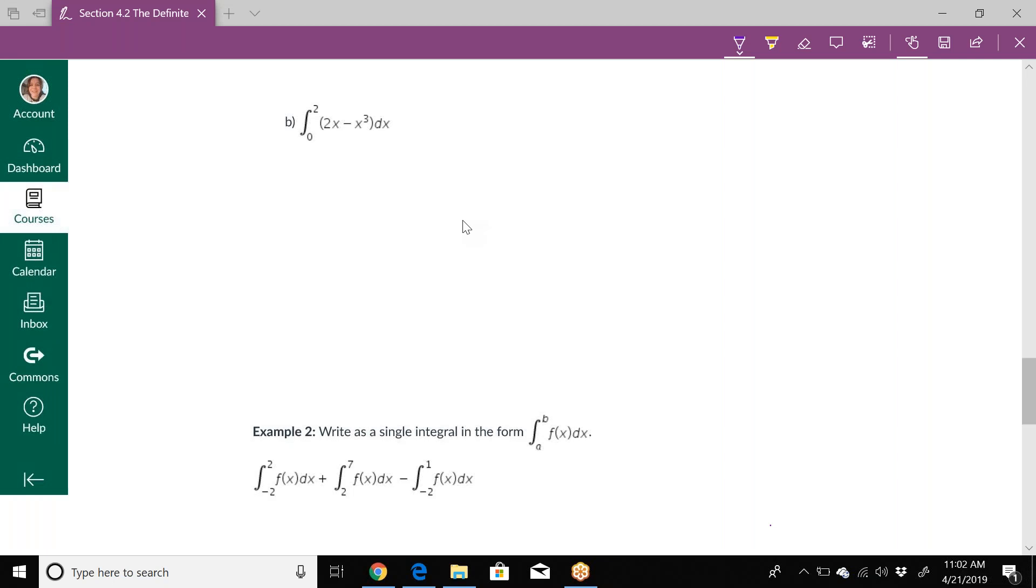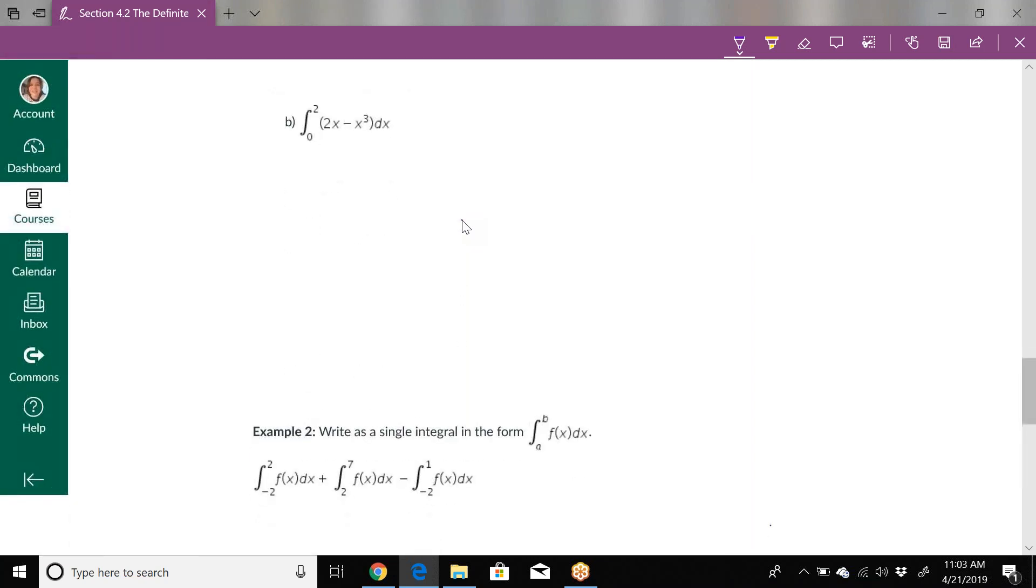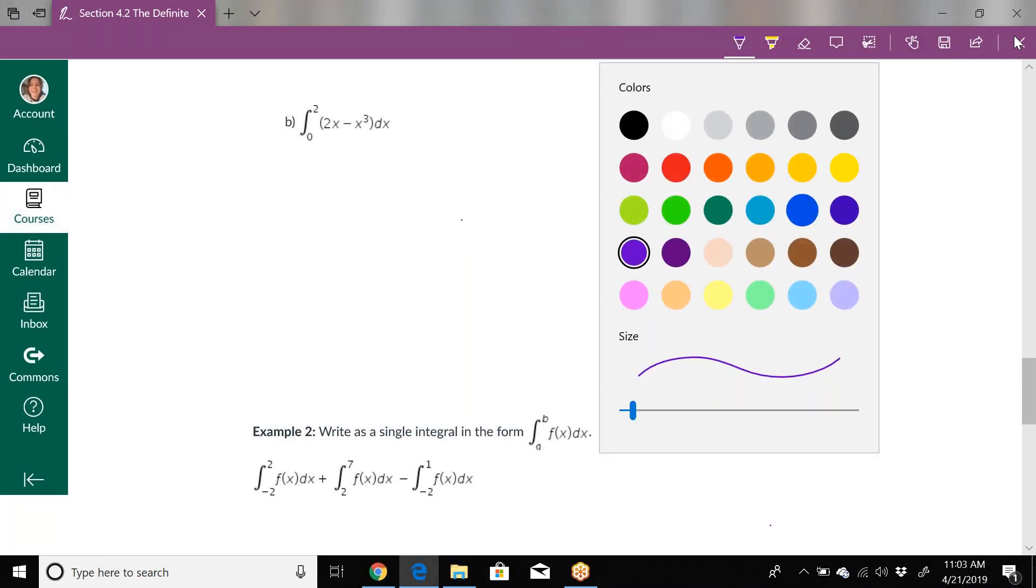Math 211 students, I'm going to do an extra example from section 4.2. The directions say evaluate the integral and express each integral as a Riemann sum. The first one I'm going to do is from 0 to 2 of 2x minus x cubed dx. I believe we did this one in class, but I want to make sure you guys have a copy on the videos as well.